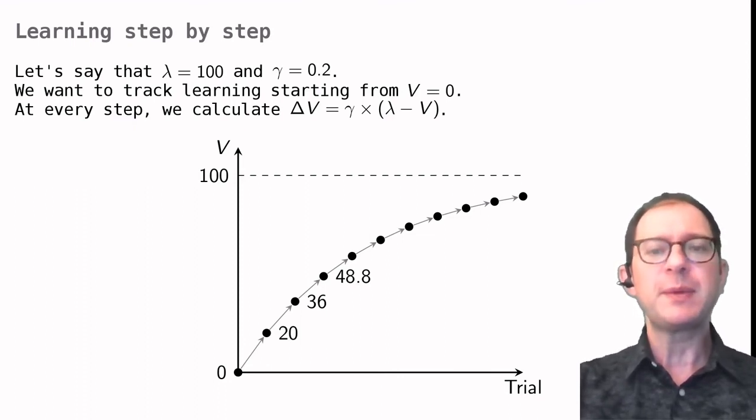This is why the RW learning rule is called an error correction learning rule. In our example, if you continue long enough, you will see V grow closer and closer to the lambda value of 100 that we have been using.